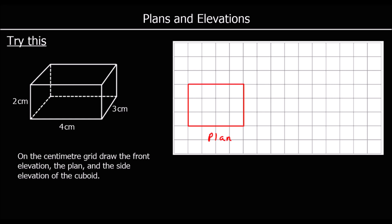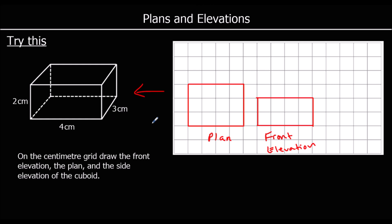What would we see from the front? 4 along and 2 up. So looking at it from the front it's 4 along and 2 up — this is the front elevation. And from the side, you will see 3 centimetres along the bottom and 2 up — so this is the side elevation.